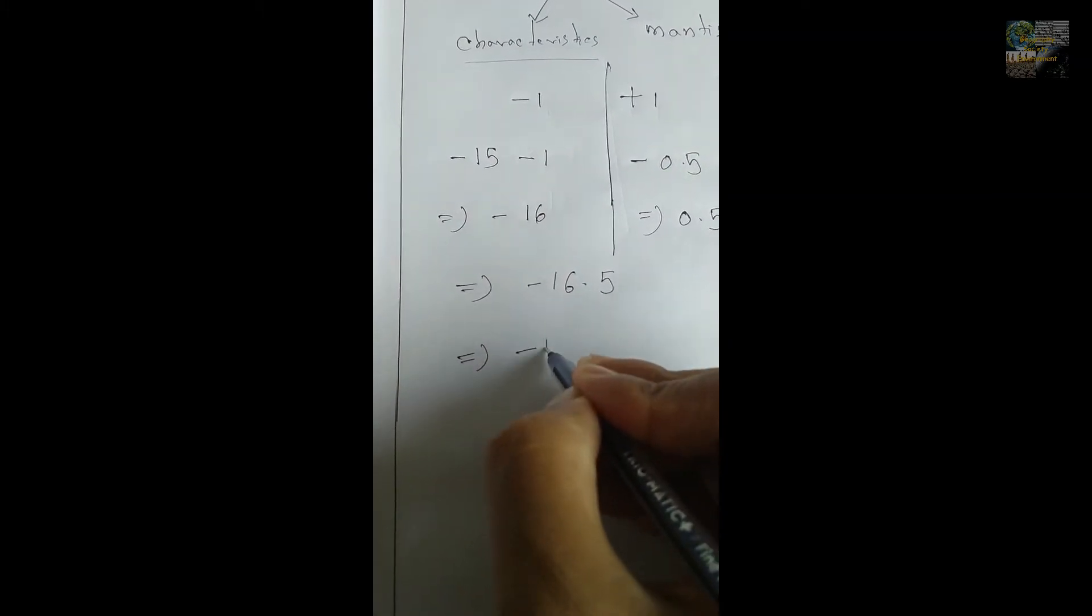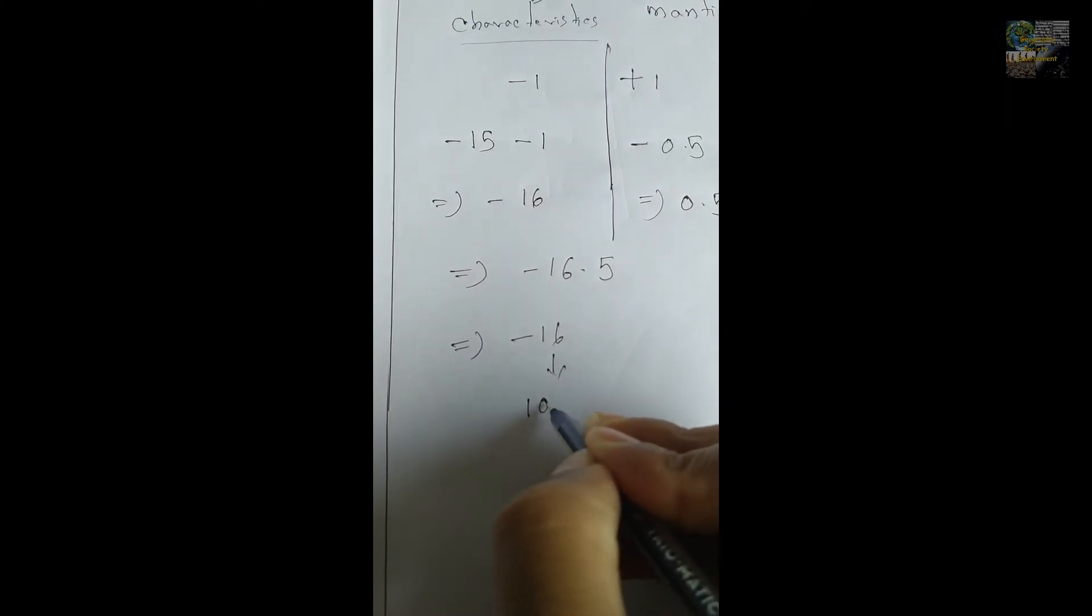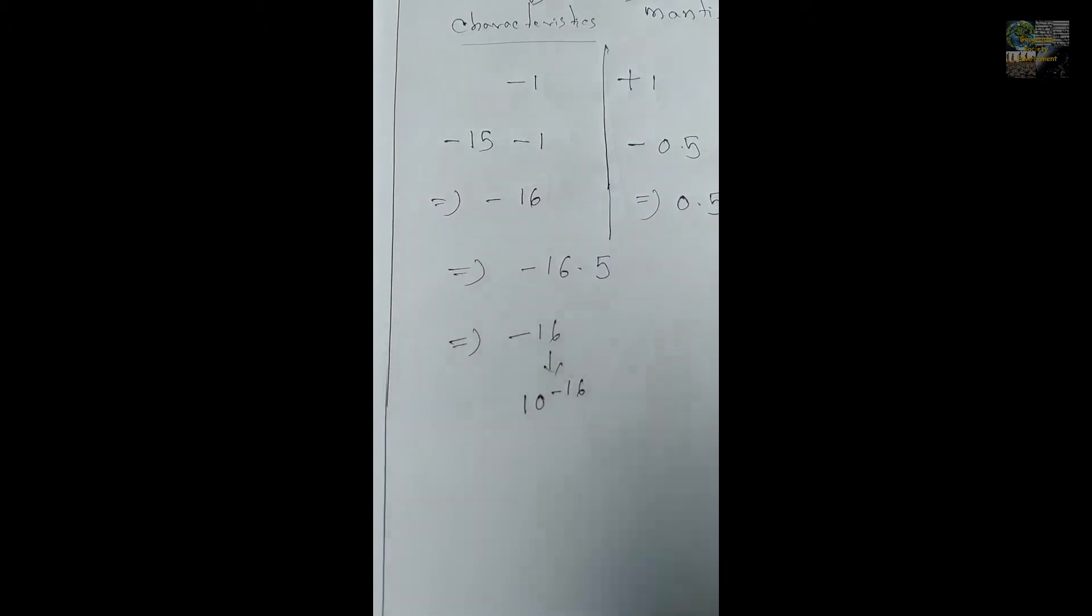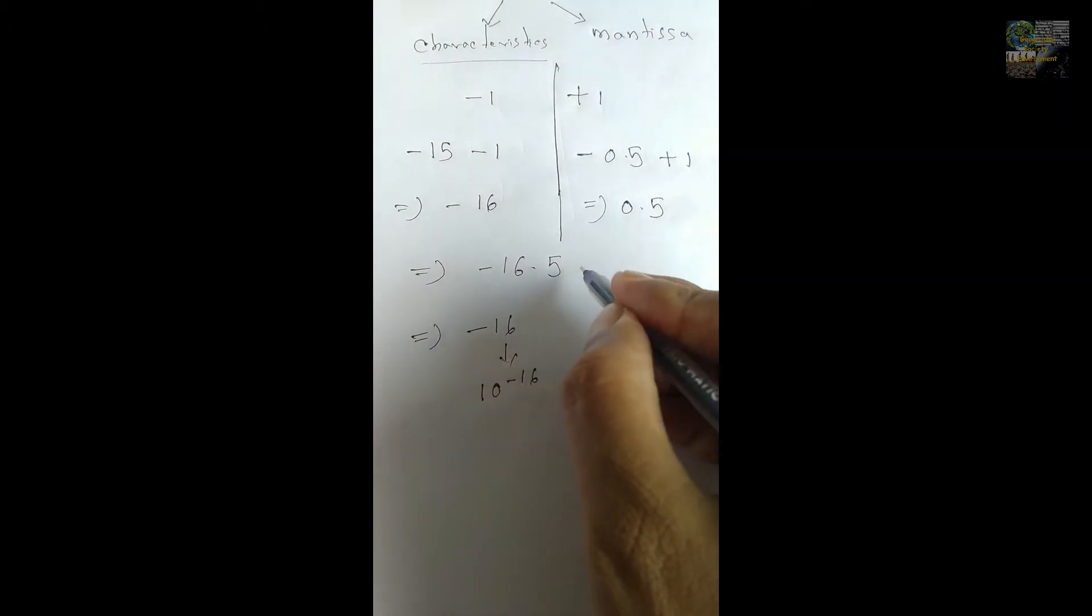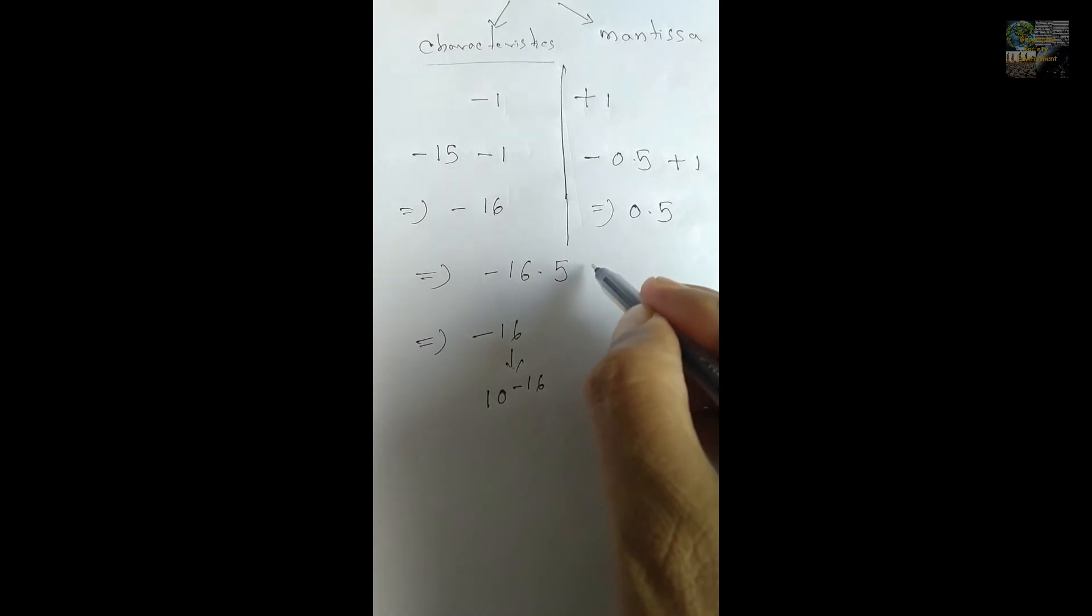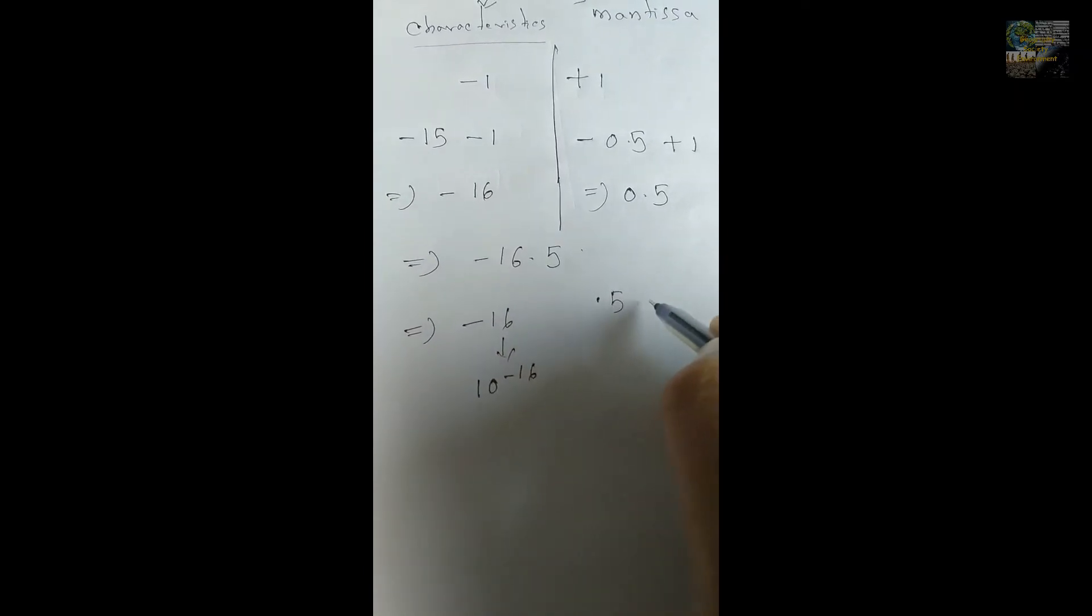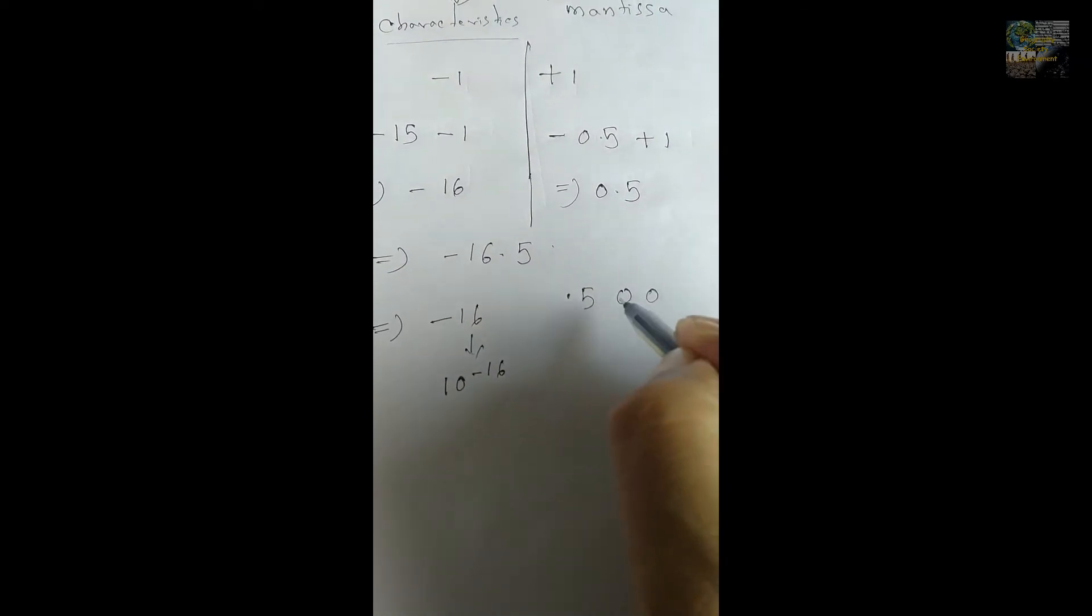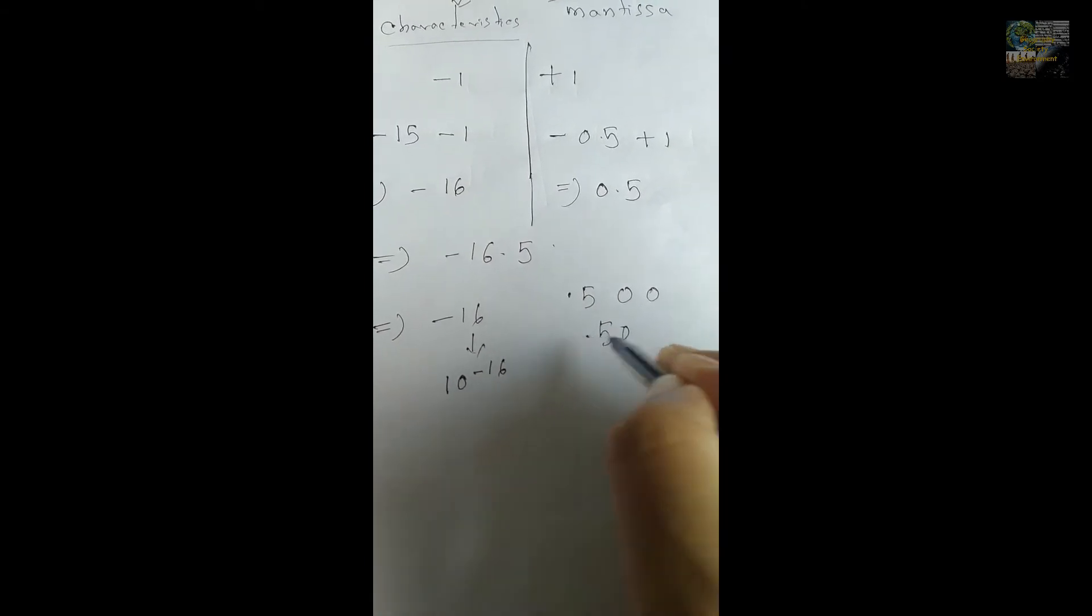That's why I can write, instead of minus 16, I can write 10 to the power minus 16. And 0.5, I am adding two zeros after 0.5 to find out the mantissa. The format is 0.500.